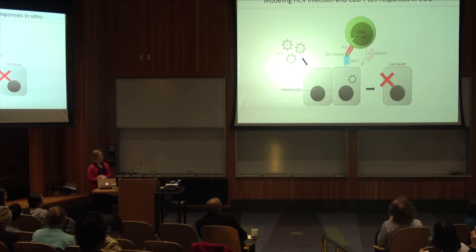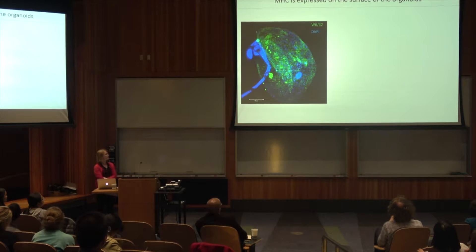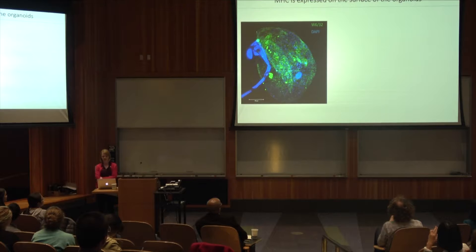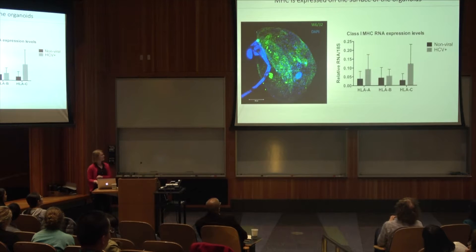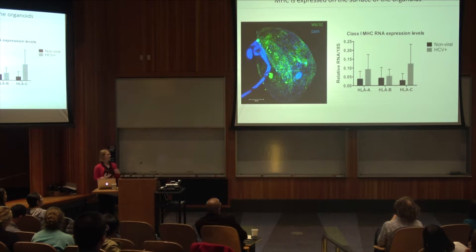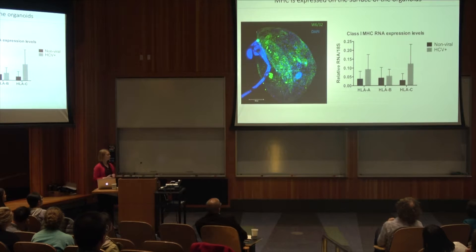Now we need to see if this will work with CD8 T cells. First we show that these organoids do express MHC on their surface — shown here in green is W632, which is a pan-MHC antibody, and DAPI in blue. So you see that's expressed on the surface. We've also shown that three of the different MHC alleles are expressed in these organoids, and there's no difference between these levels from a non-viral donor or an HCV-positive donor. So our next step was to think about whether T cells can recognize these.